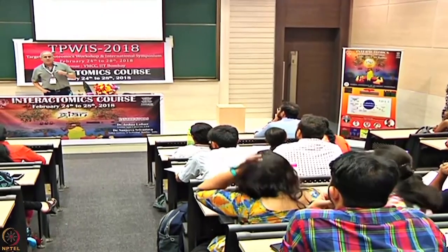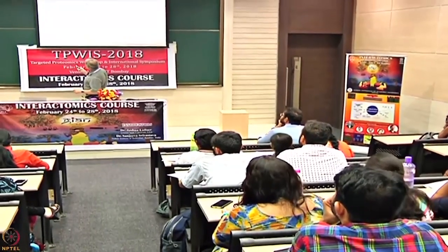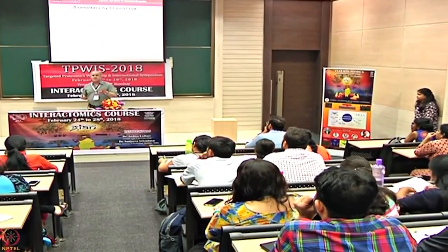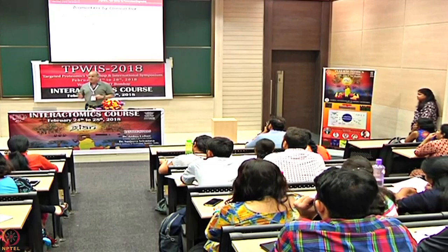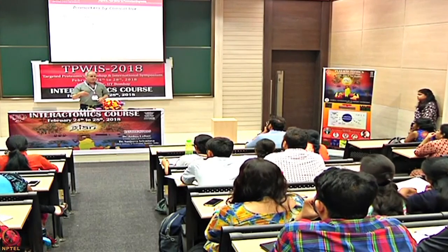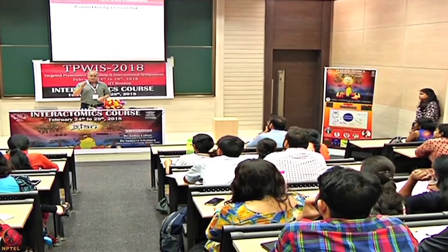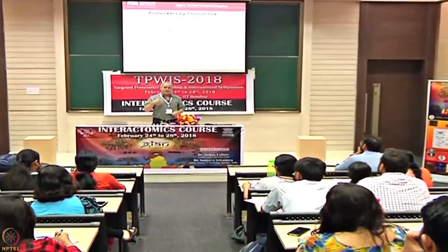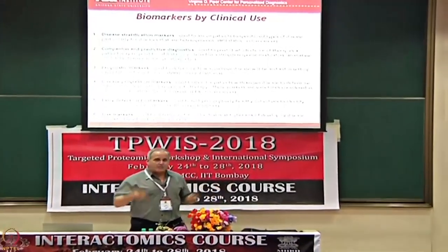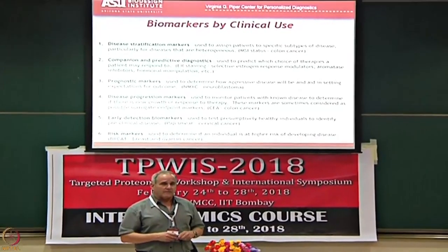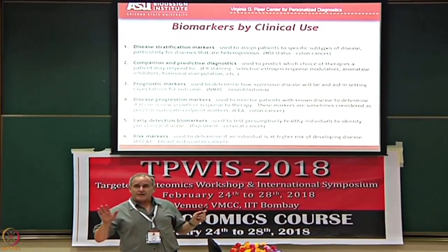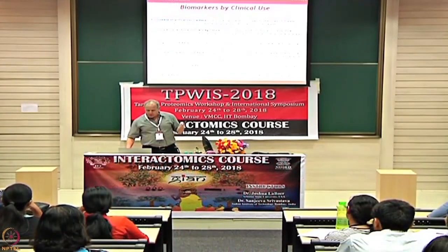You can predict the risk of the disease — so the difference between early detection markers and risk markers is that both are used on healthy people. But a risk marker doesn't really find the disease — it just tells you the likelihood that you might develop it. Whereas an early detection marker is intended to determine if you have the disease right now. If you do a pap smear on a woman, you're looking for the presence of neoplasia and asking whether she has cervical cancer now. If you do a risk marker like a BRCA1 test, you can't say that person has breast cancer — all you can say is that she has an increased likelihood of getting it. Getting your genome sequenced — that's a risk marker, not a disease detection marker.